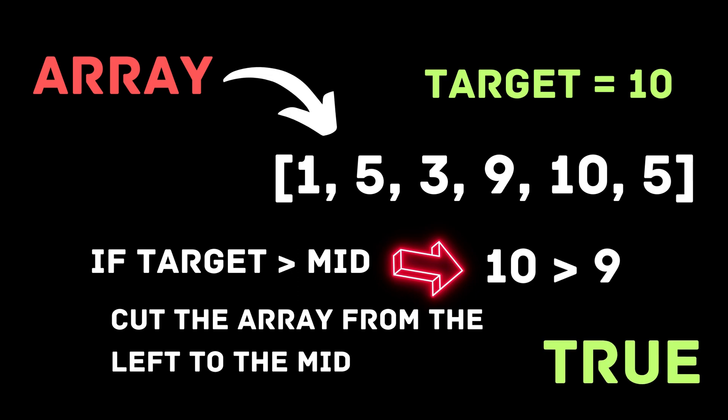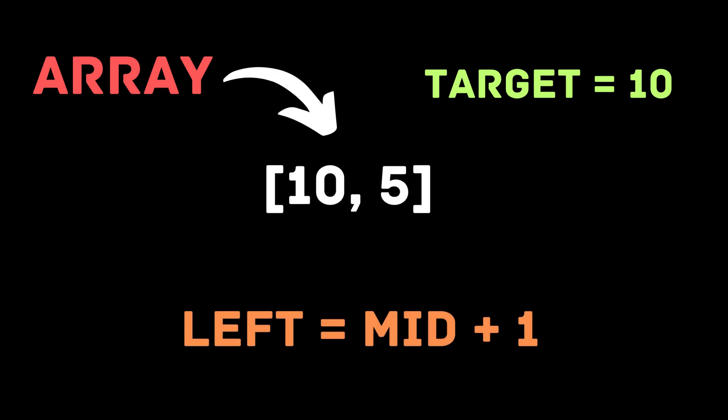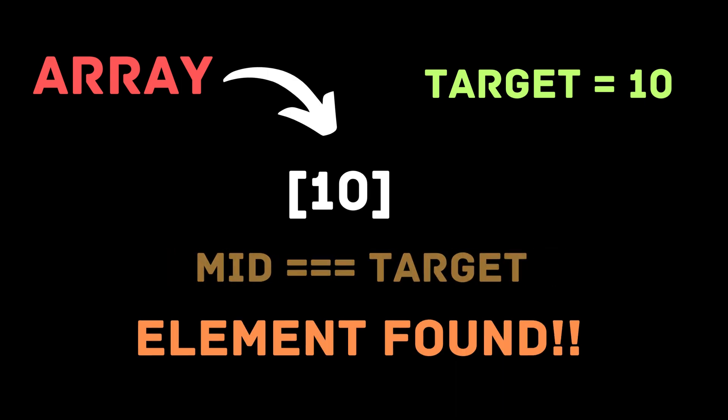If the element is larger, keep the left as mid plus one because the element will be in the right part. We keep doing this process until we find our element.